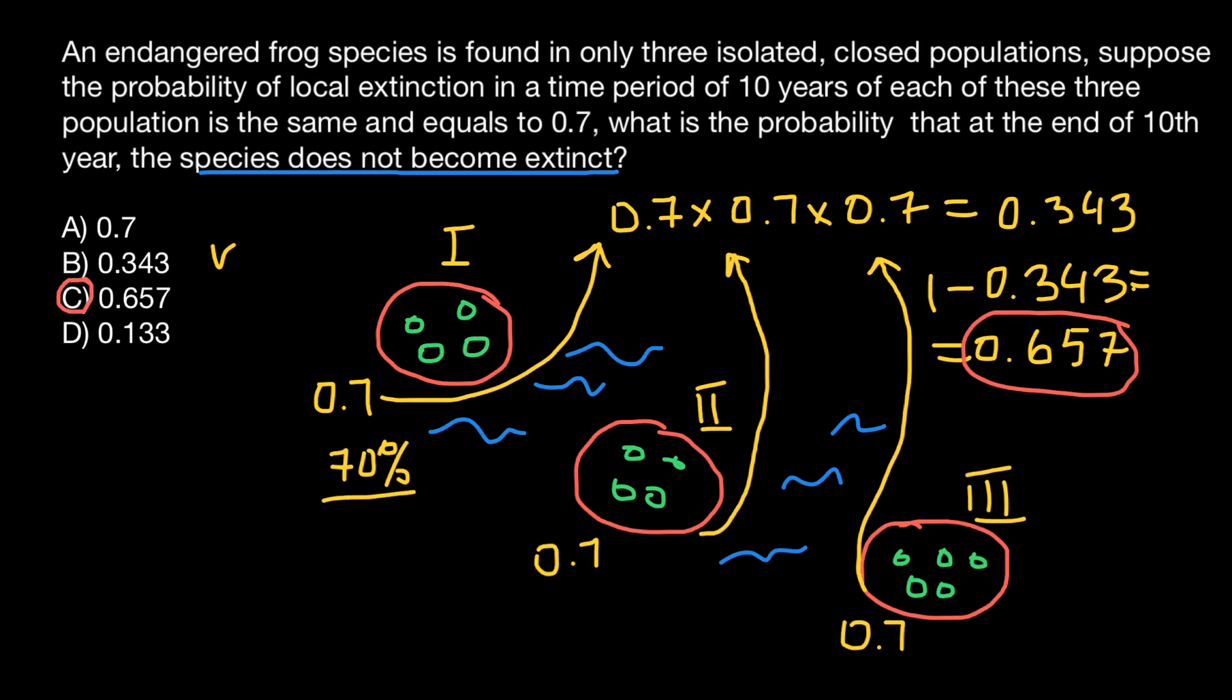Again, here we have found probability that on all three islands, the species of frog would go extinct. So 1, which is 100%, minus this probability would give us probability that at least on one island, we still would have this species.